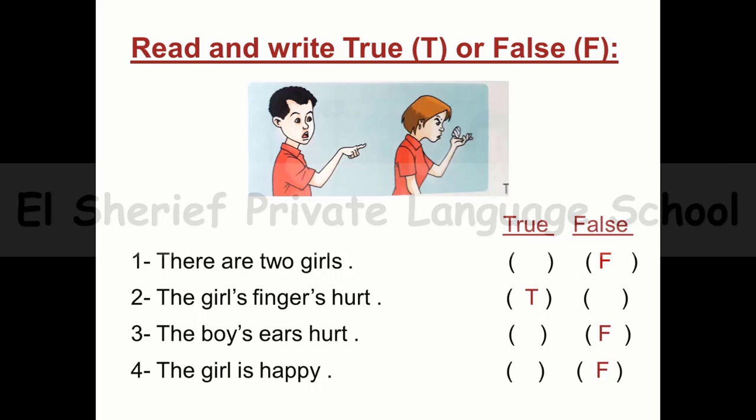Now let's move to the read and write true or false activity. Read the sentence and look at the picture. If the sentence matches the picture, write true; if not, write false. Number one: there are two girls — false. Number two: the girl's fingers hurt — true. Number three: the boy's ears hurt — false. Number four: the girl is happy — false. And that's all. Thank you very much for listening.